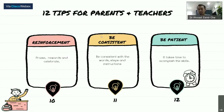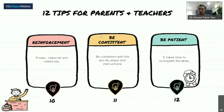The last tip is to be patient. Achieving self-help skills for individuals with autism takes time and cannot be done in a single day. For example, toilet training can take a week or a few weeks. So to all teachers and parents out there — be patient and be consistent with the technique that you use.